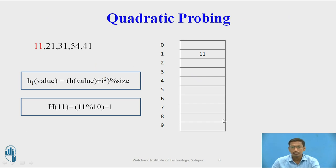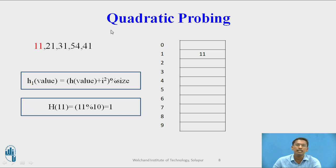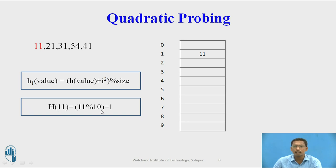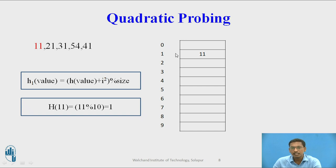Suppose I am using a hash table of size 10 and I want to insert 11, 21, 31, 54, and 41, resolving collisions using quadratic probing. The formula is: hash_key(value) = (hash_key(value) + i²) mod size. First, I want to insert 11. Hash key of 11 = 11 mod 10 = 1. Since index 1 is free, 11 is inserted directly at index 1.